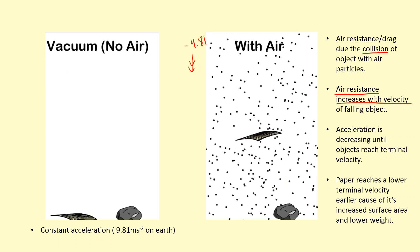Because the paper has a lower weight, and also because the paper has a larger surface area, you'll find that the paper is going to reach terminal velocity, a lower terminal velocity, and at an earlier point in time.